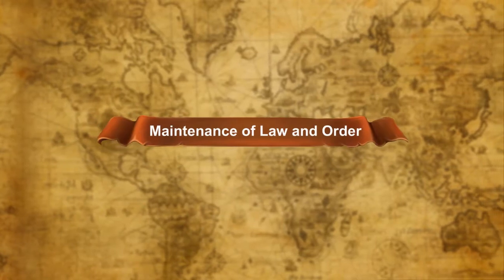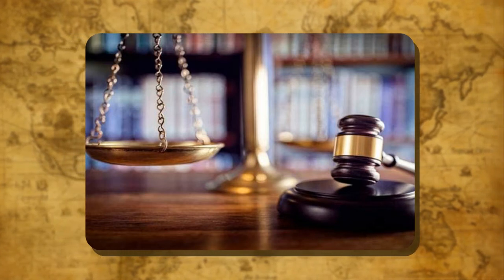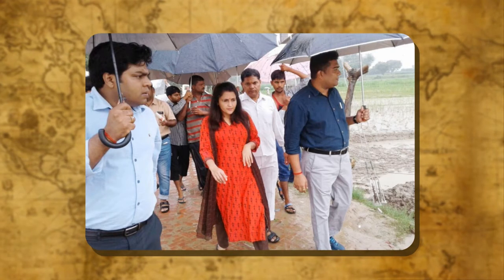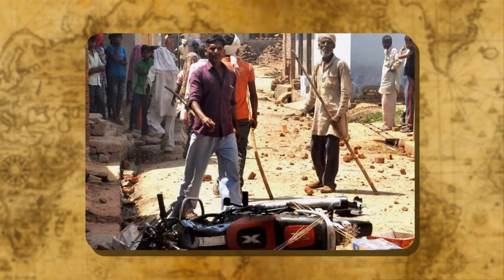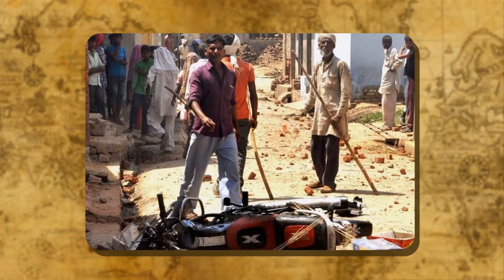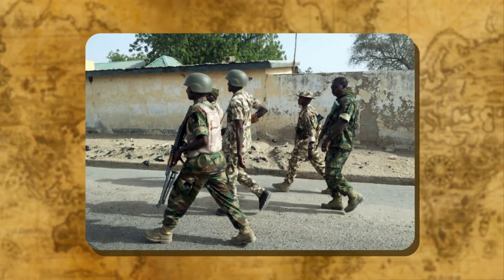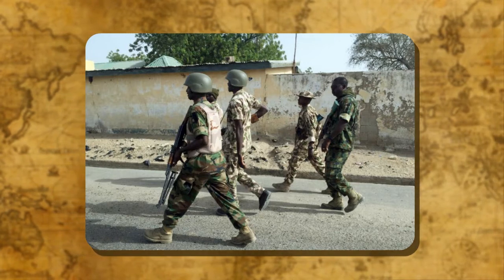Maintenance of law and order in the district is a very important duty of the District Magistrate or Deputy Commissioner. He is helped by the Superintendent of Police, SP or SSP, who is a member of IPS — Indian Police Service — and is the highest police officer in the district. If there is a threat to peace, the DM or DC imposes Section 144, which prohibits people from assembling at a place. He can also impose curfew and ban carrying of arms as well as movements out of home.